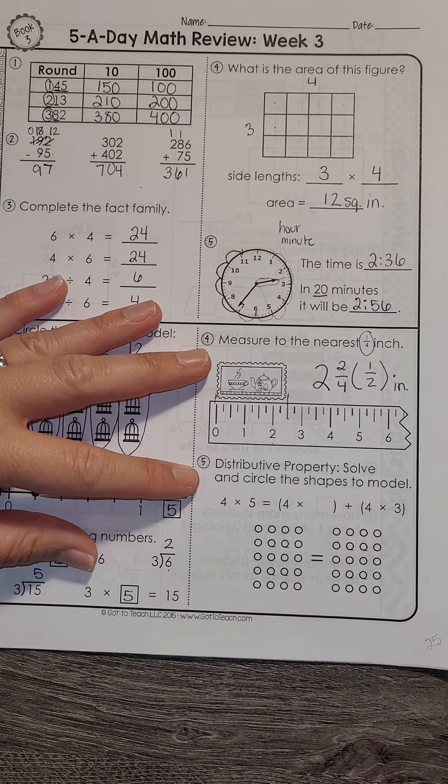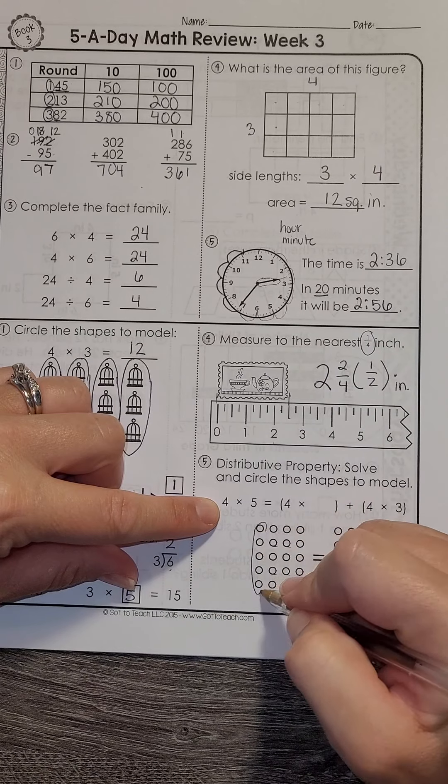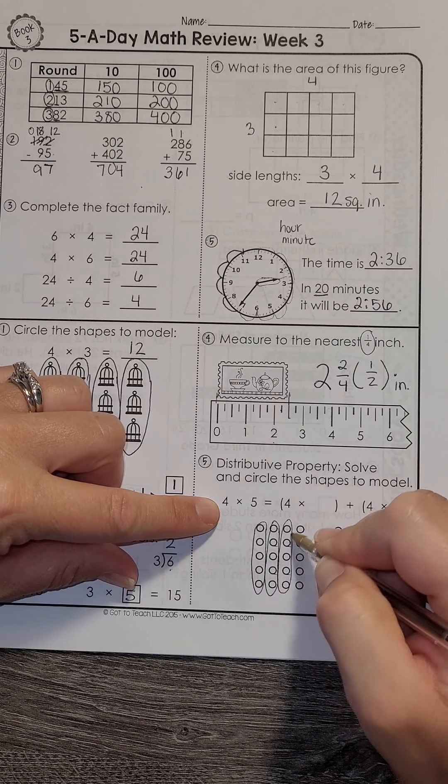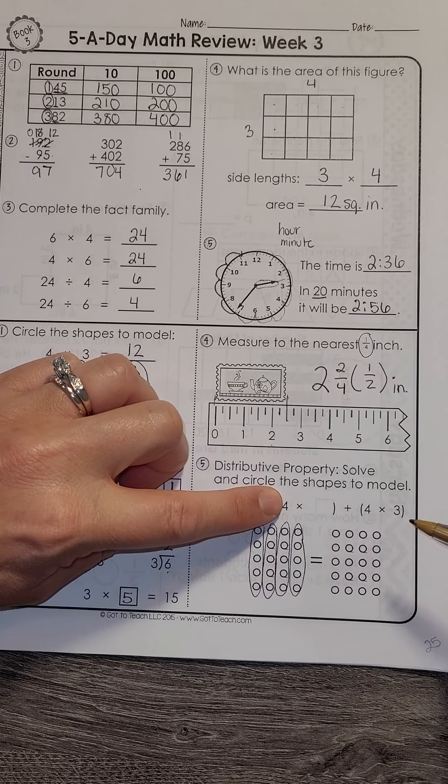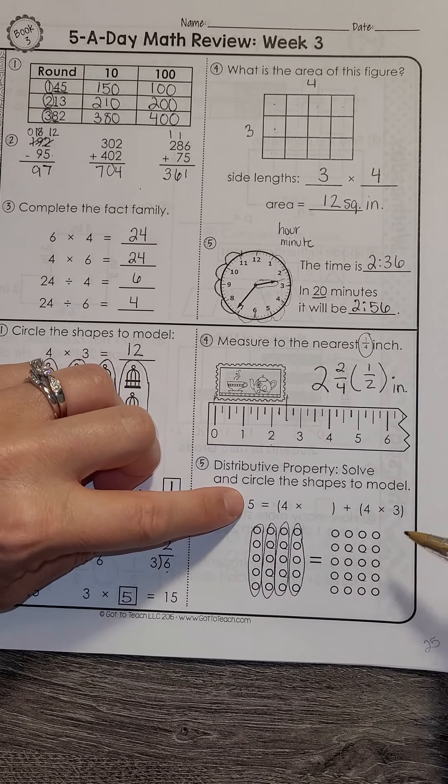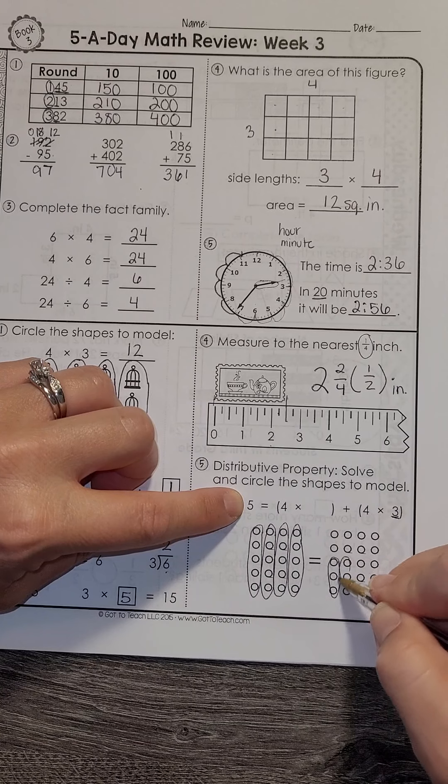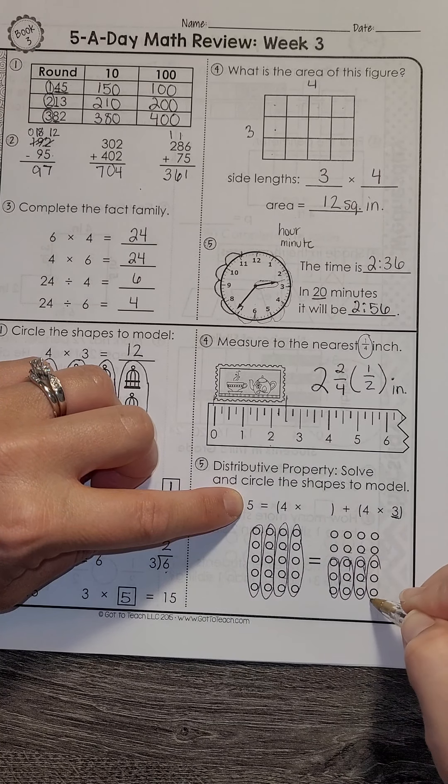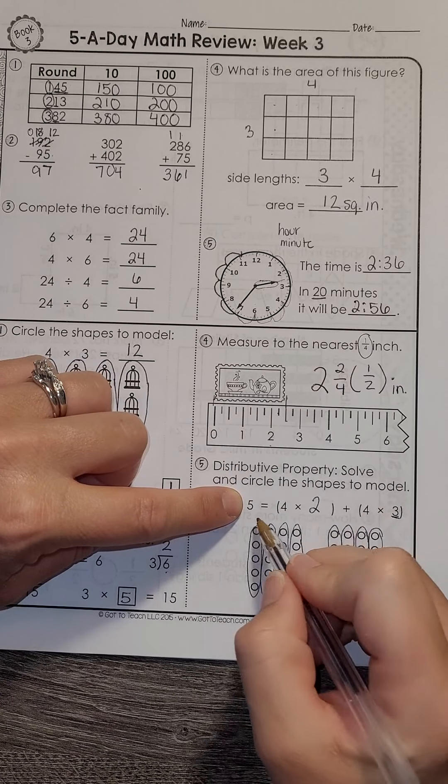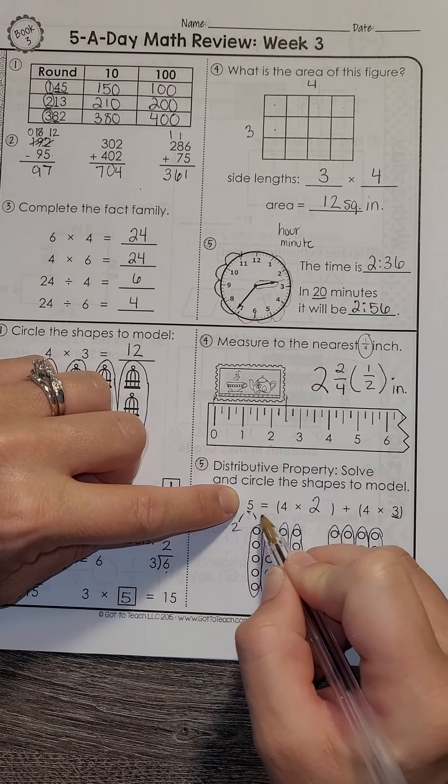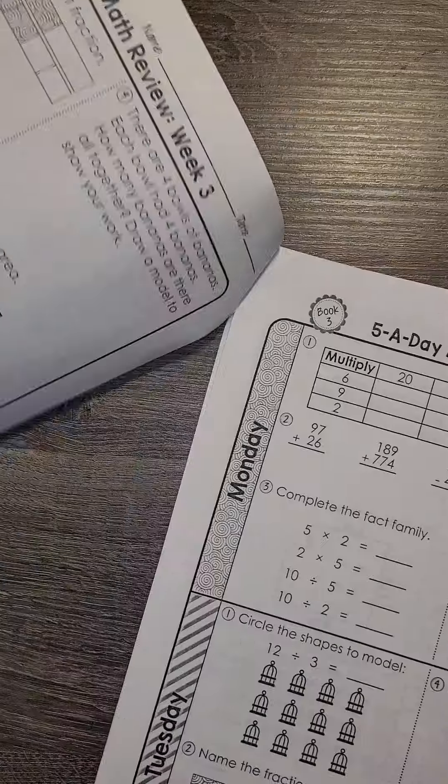Distributive property. Solve and circle the shapes. So the first one is 4 groups of 5. So that should look like this. Now in the second one, they've kept the 4 groups. But instead of 4 groups of 5, they've broken the 5 into 3. So 4 groups of 3. And then what would be left here would be 4 groups of 2. So they broke the 5 into 2 and 3. Go ahead and check your Monday and Tuesdays.